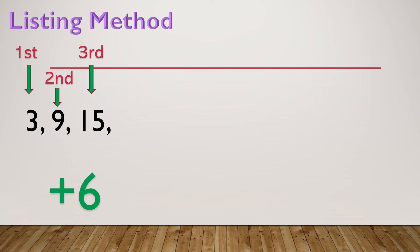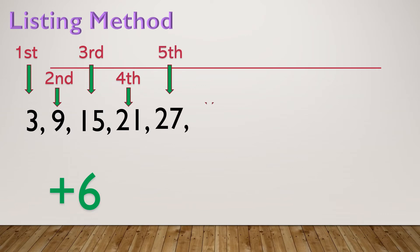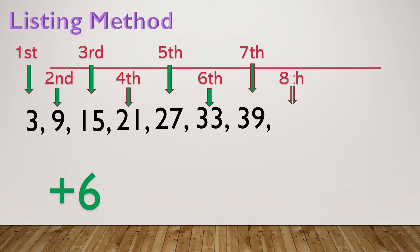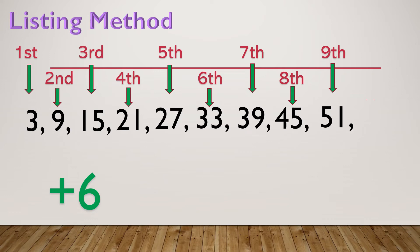Adding 6 each time: the fourth term is 15 plus 6 equals 21. Fifth term: 27. Sixth term: 33. Seventh term: 39. Eighth term: 45. Ninth term: 51. And the tenth term: 51 plus 6 equals 57. Just like with the arithmetic sequence formula, we still get the same value of 57. Whatever method you use — the listing method or the formula — you will get the same final answer.